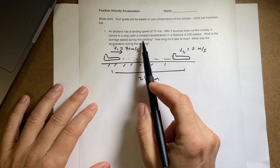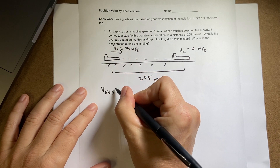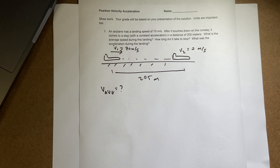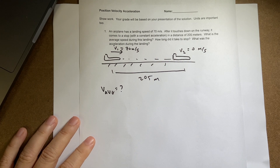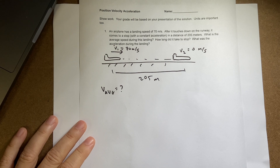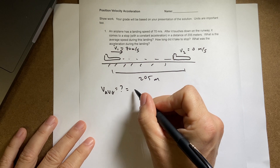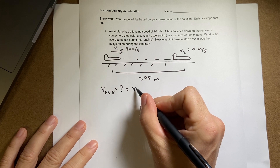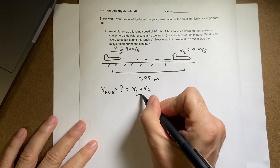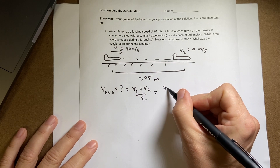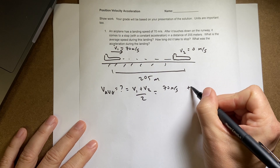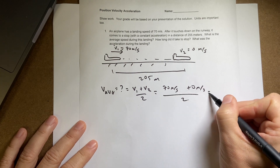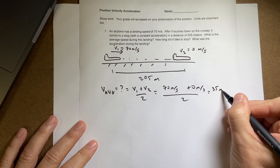The first question asks for the average speed. If it is a constant acceleration, the average speed is V1 plus V2 over 2 — you can literally just average them. So this is going to be 70 meters per second plus 0 meters per second, divided by 2. That gives 35 meters per second.